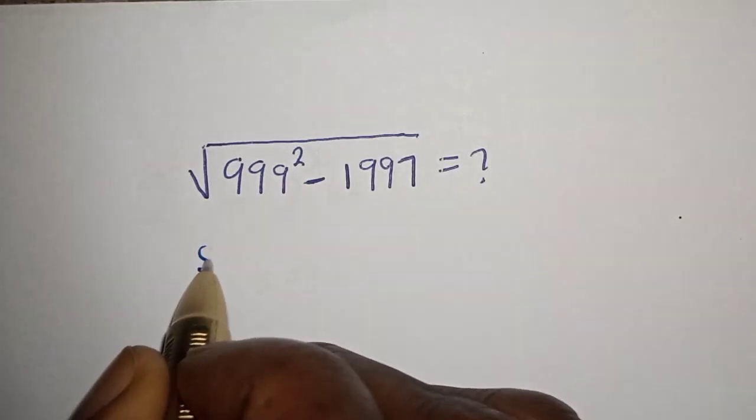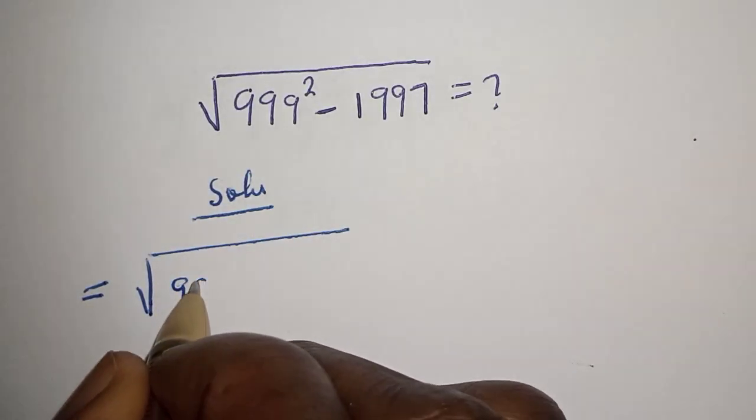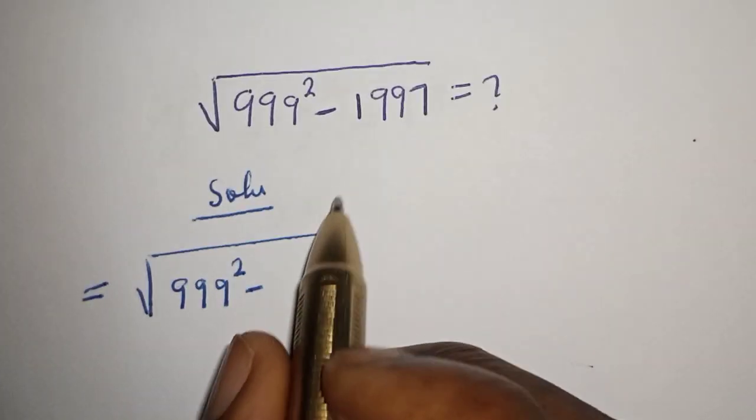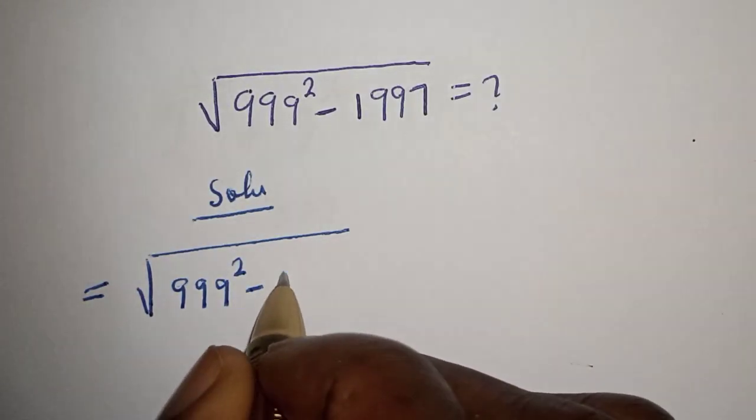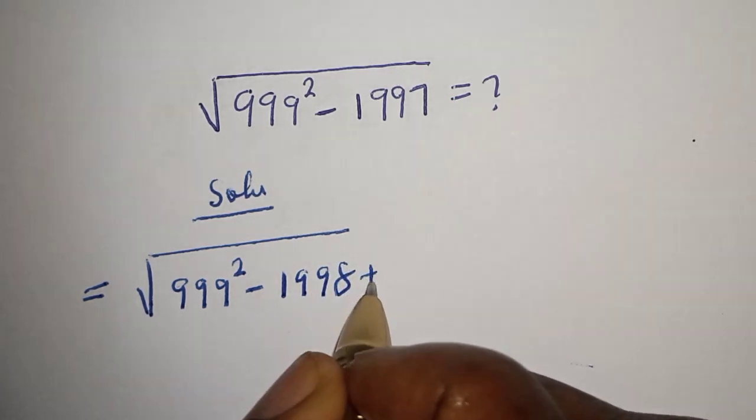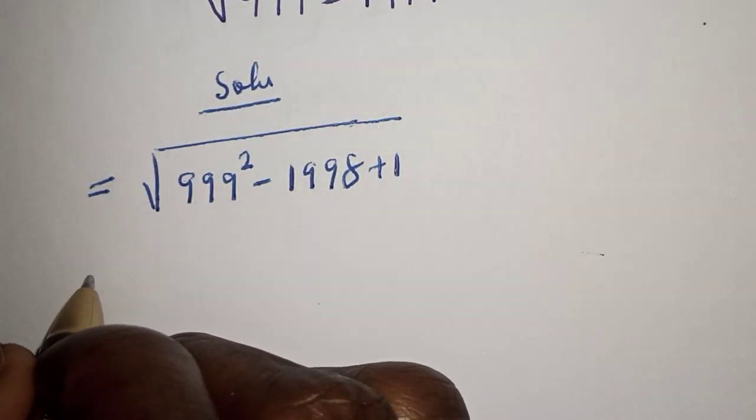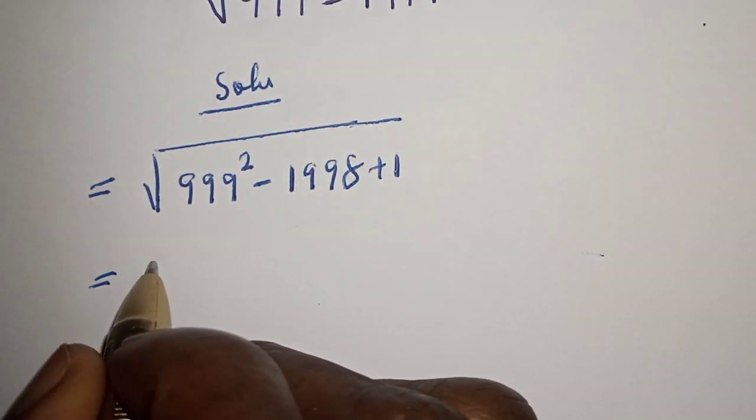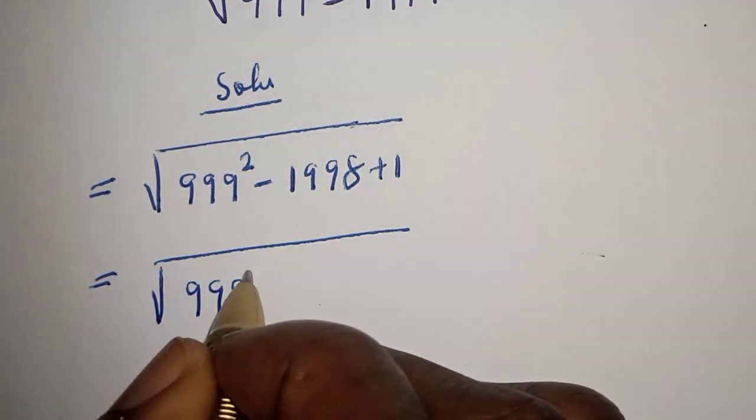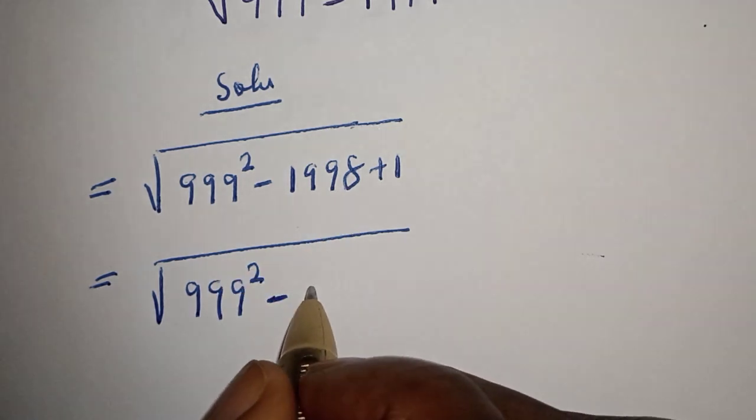Solution: 999 squared minus 1997. We can rewrite 1997 as minus 1998 plus 1. This is equal to square root of 999 squared minus this, completing it as 2 multiply by 999 multiply by 1.